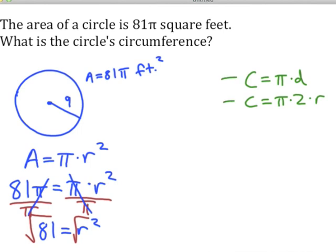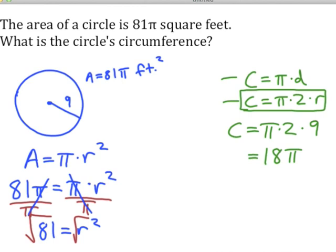Coming back to our circumference, we can pick either of these two formulas. Since I already have the radius, I'll use this formula. The circumference is π times 2 times the radius, which was 9. We can clean that up: 2 times 9 is 18, so the circumference is 18π feet.